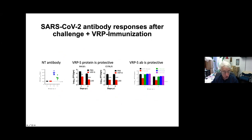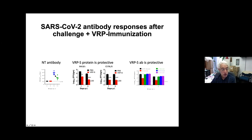We used VRPs — Venezuelan replicon particles — immunizing mice about three weeks before adenovirus transduction and infection. Immunized mice show a great decrease in virus loads in both BALB/C and B6 mice. The transduction system does induce an antibody response; neutralizing antibody titers are detectable at day 10 after infection, though they're not very high and seem to diminish slightly by day 15.